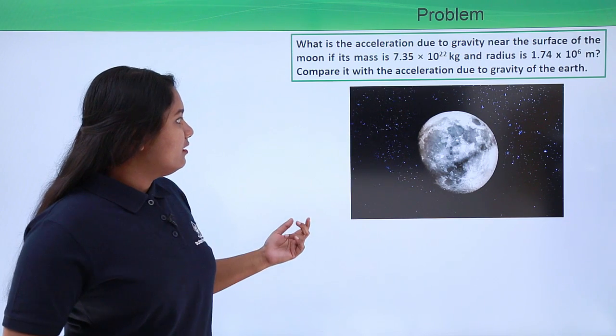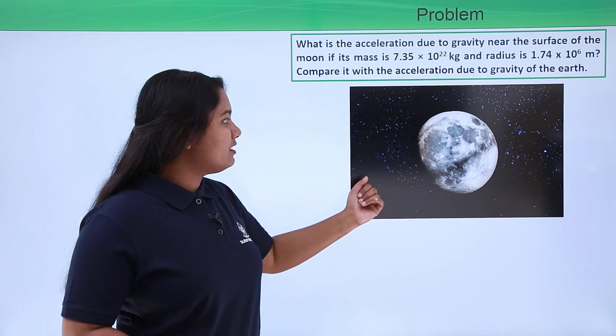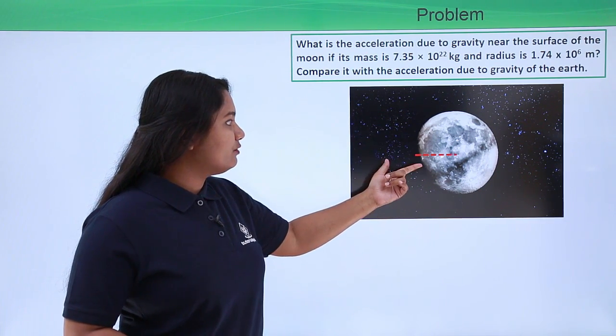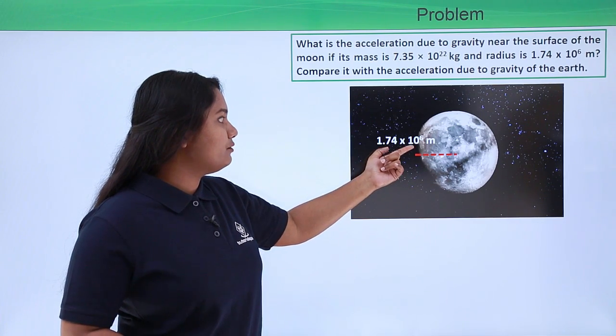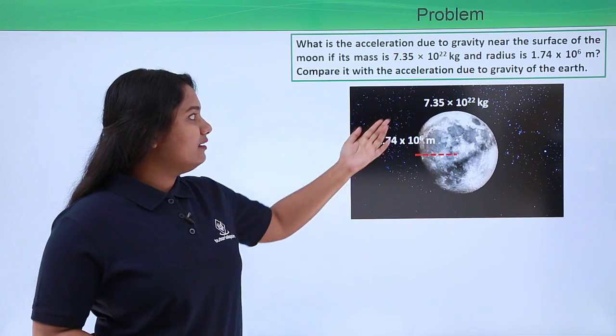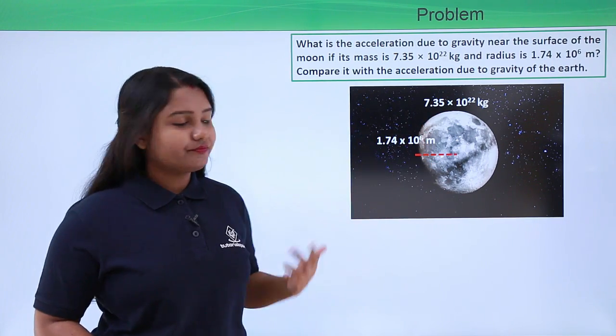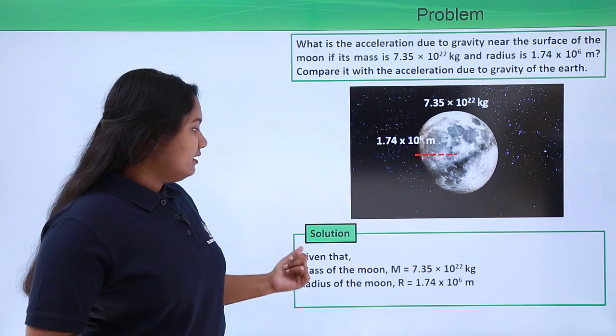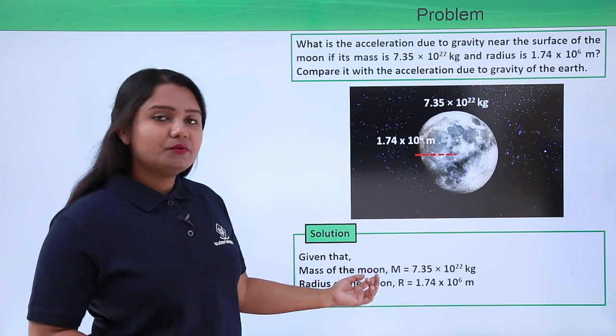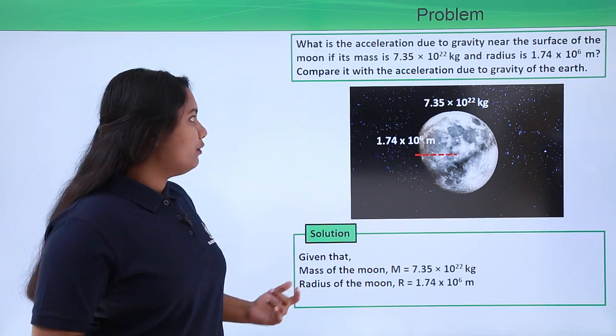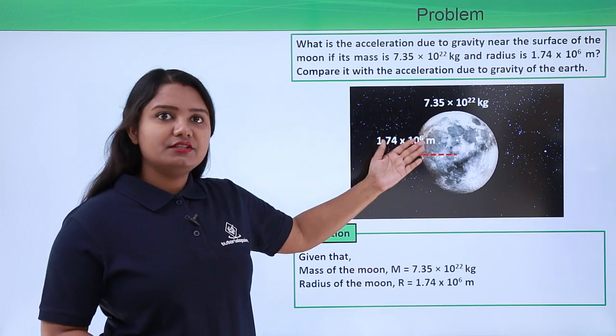So let us do that. The question has given us that the radius of the moon is 1.74 × 10⁶ meters and its mass is 7.35 × 10²² kg. Now let us list them out, so I have listed them out here and now we will go ahead and calculate its acceleration due to gravity.